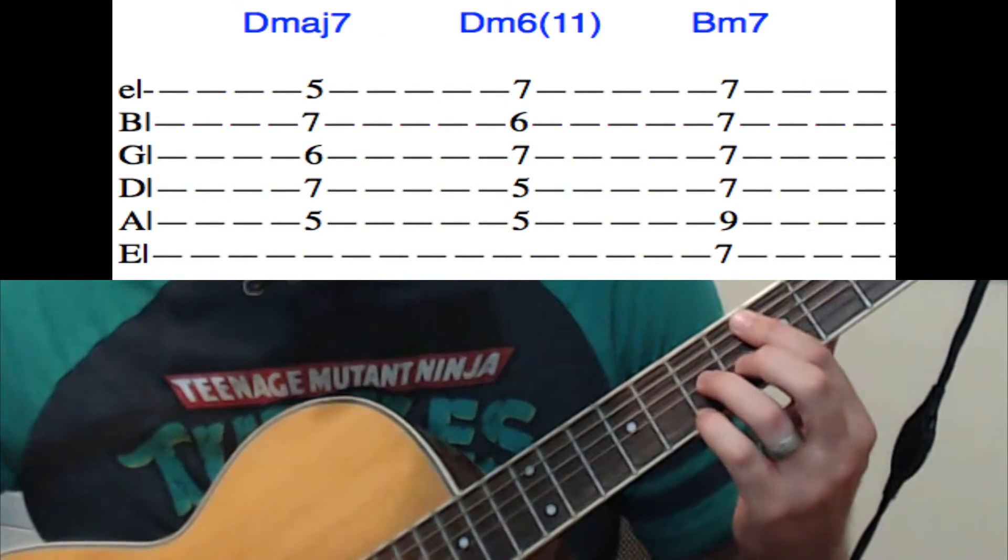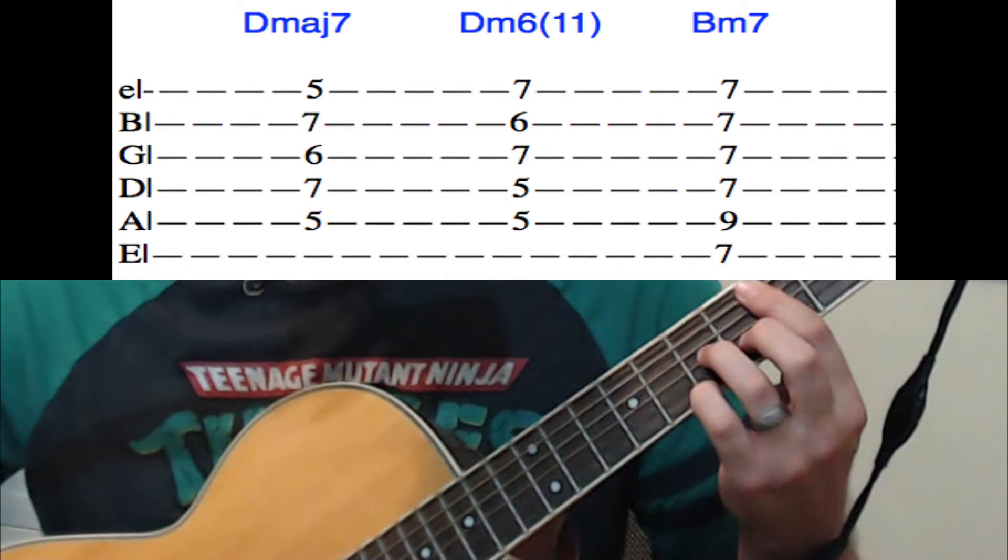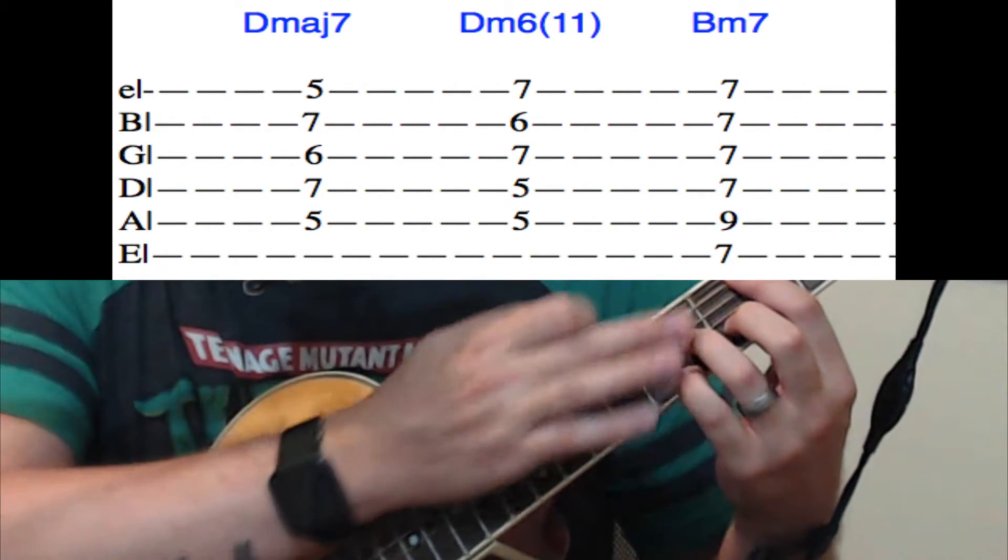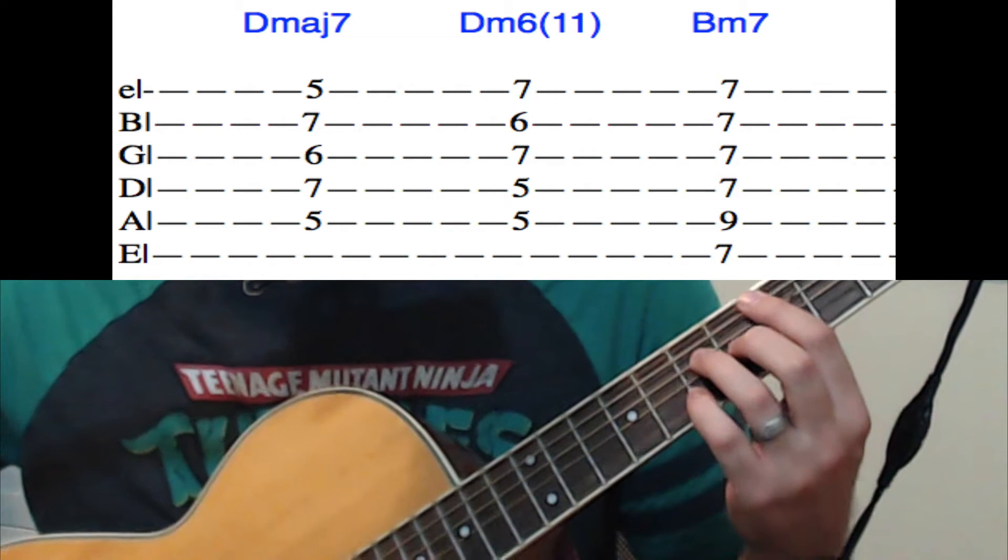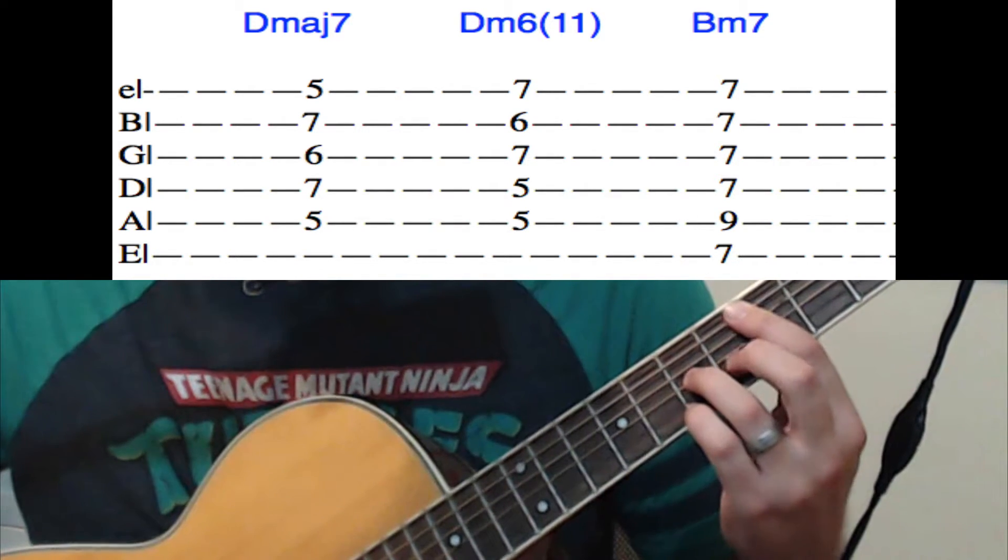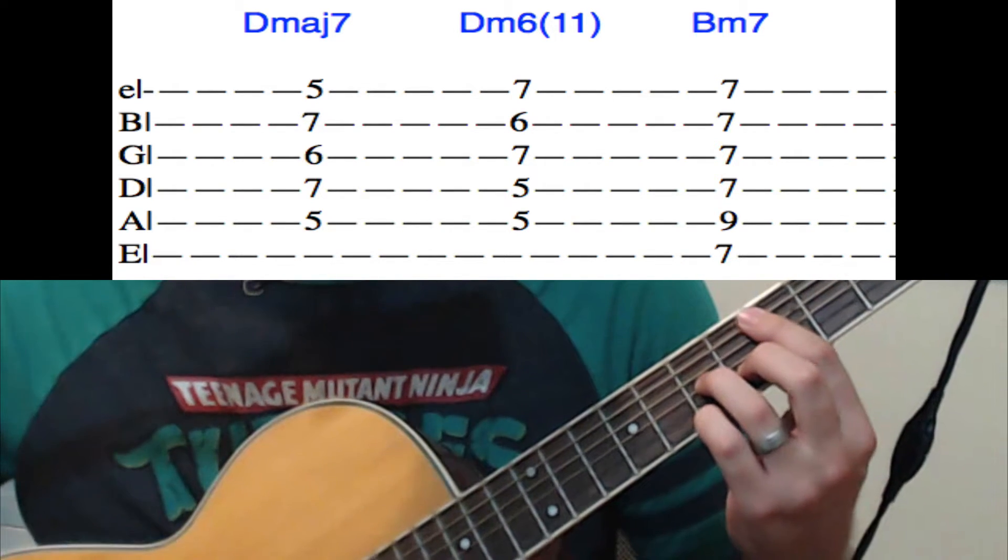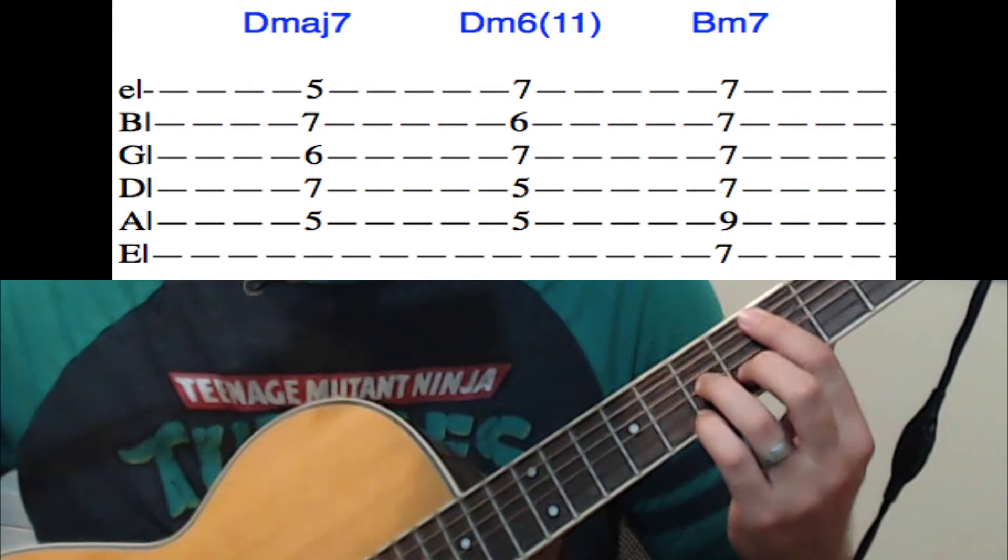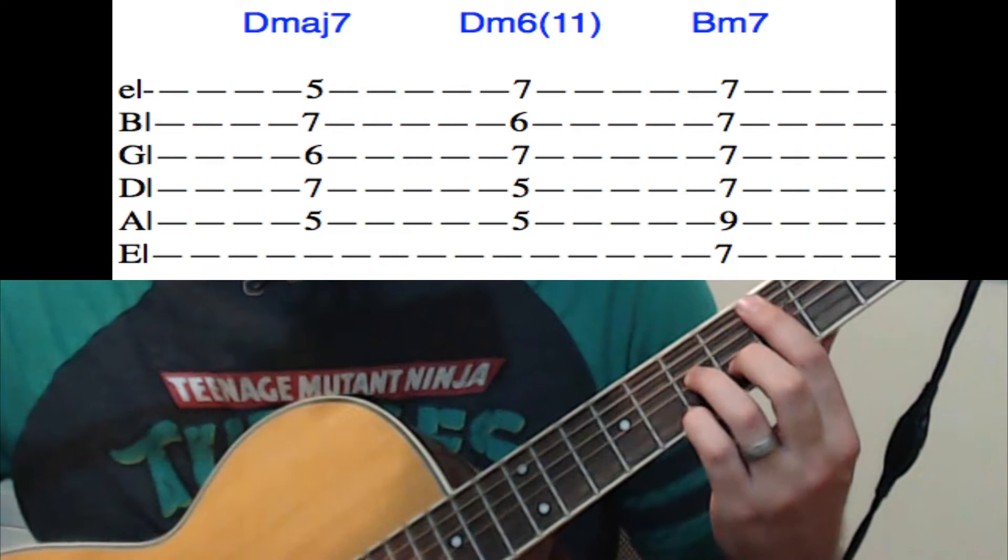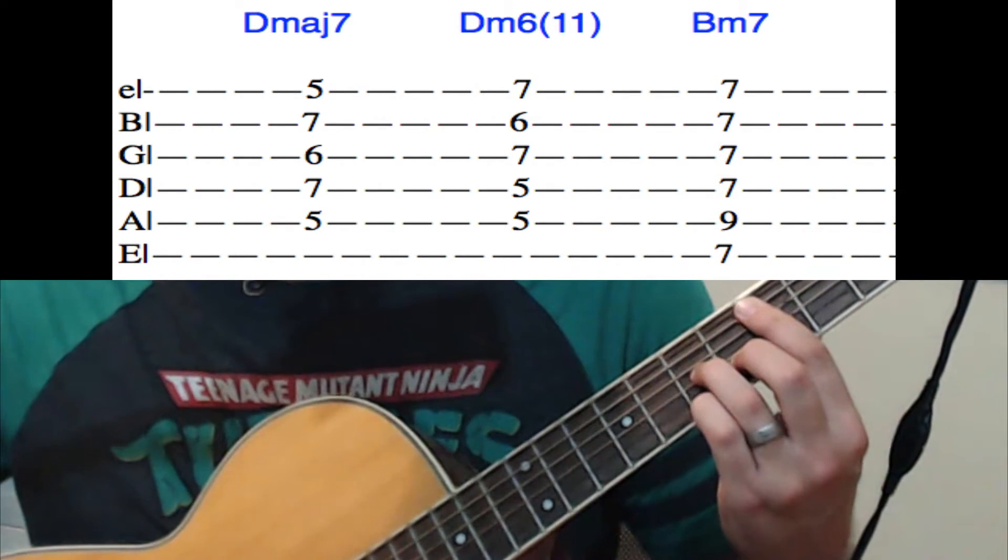Now the next chord is gonna be a Dm6(11). Okay, so you basically take that little triangle that you're making with your fingers from the Dmaj7 and you just move those all up a fret or a string. So they're down here, now you just move them up. You keep your pointer finger the same. So that's gonna be 5, 5, 7, 6, 7.